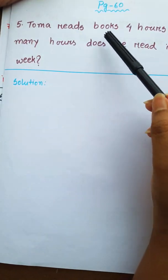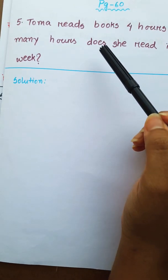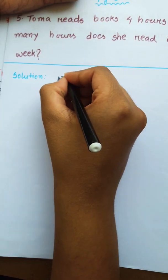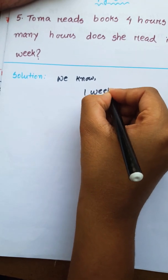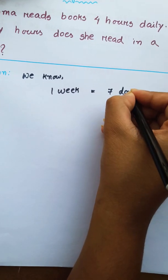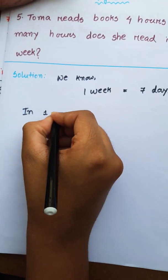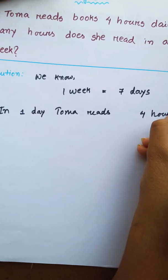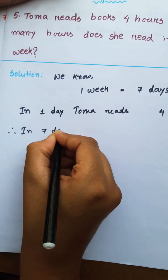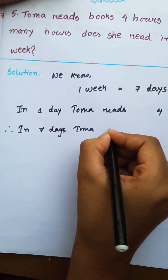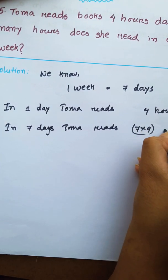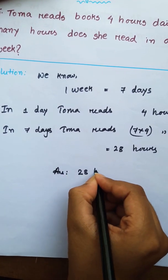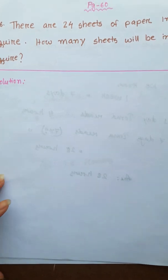In this next problem: you read books 4 hours daily. How many hours does she read in a week? We know 1 week is equal to 7 days. Toma reads 4 hours in one day. Therefore, in 7 days Toma reads 7 into 4 hours, that is 28 hours. So the answer is 28 hours.